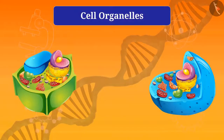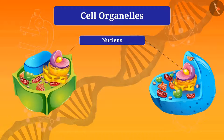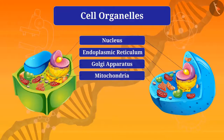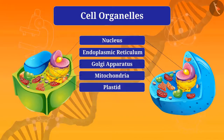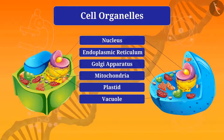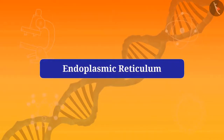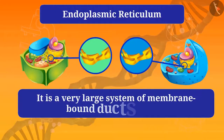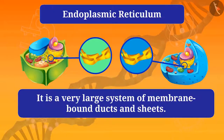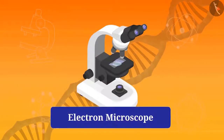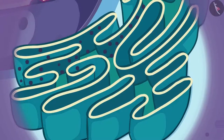These are cell organelles: nucleus, endoplasmic reticulum, golgi apparatus, mitochondria, plastids, and vacuoles. We have already learned about the nucleus. Now we will learn about the endoplasmic reticulum. It is a very large system of membrane-bound ducts and sheets. Its composition is similar to that of the cell membrane.